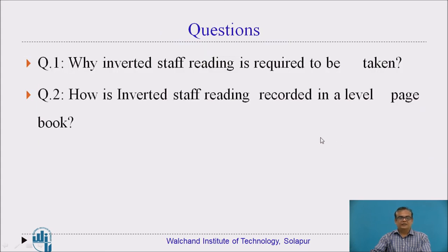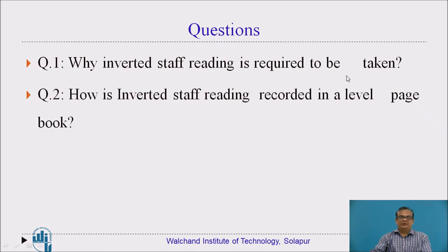Now let us pause here, students. Here are two questions for you. First: why is inverted staff reading required to be taken? Second: how is inverted staff reading recorded in a level book page? The answer to the first: when RLs of such points are required which are at a higher position than the instrument position, there is no alternative but to take inverted staff reading. The answer to the second: inverted staff reading is always recorded as a negative reading because the staff is inverted. Such points include soffits of a bridge, beams, slabs, etc.